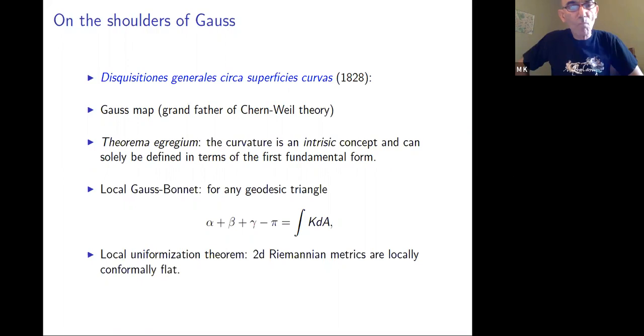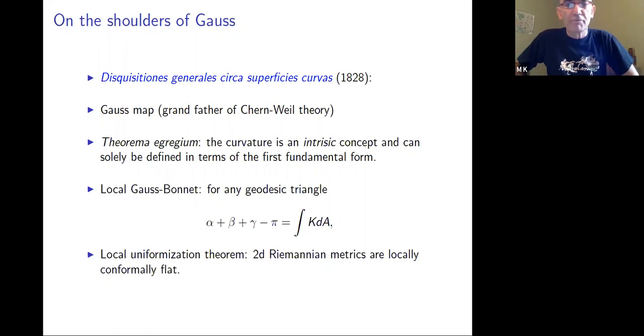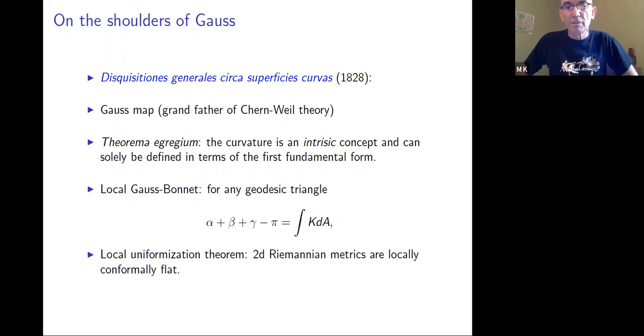For example, the Gauss map — his first invention in that 1828 paper — is the grandfather of Chern-Weil theory. It's a classifying map. His Theorema Egregium amazingly proves that curvature, which was at first defined extrinsically, turns out to be completely expressible in terms of a quadratic differential — what we now call the Riemannian metric for surfaces — started there.